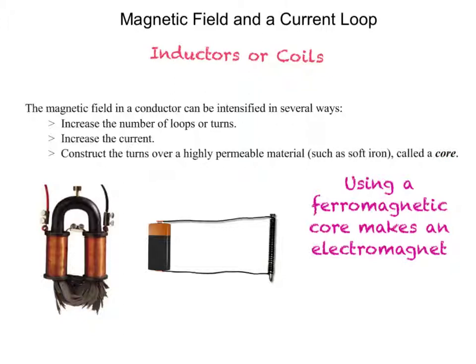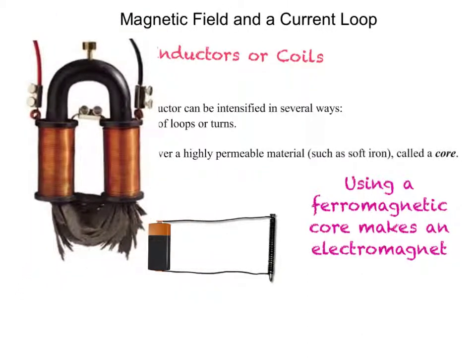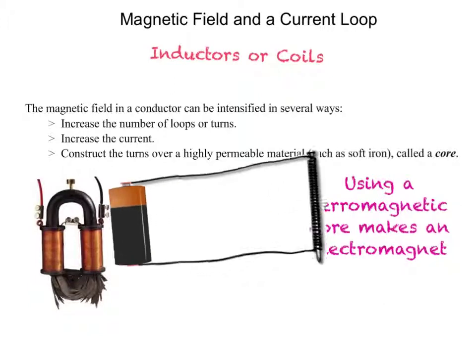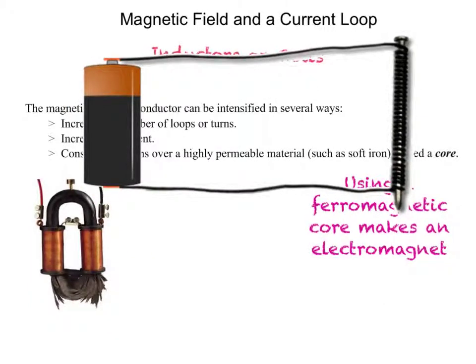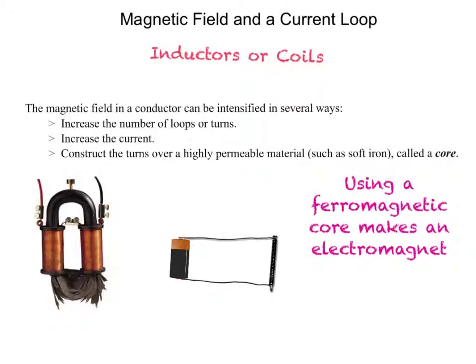When the core is a ferromagnetic material, we've made what's called an electromagnet. Electromagnets have a lot of advantages over permanent magnets. They can develop really intense magnetic fields — much stronger than permanent magnetic fields. Like if you've ever seen at a junkyard, cars being lifted up by a magnet: that magnet is an electromagnet, not a permanent magnet. Electromagnets can be fancy or really simple, like wrapping a nail with wire and attaching it to a battery to make an electromagnet that will pick up paperclips. Electromagnets are also important because they can be turned on and off.